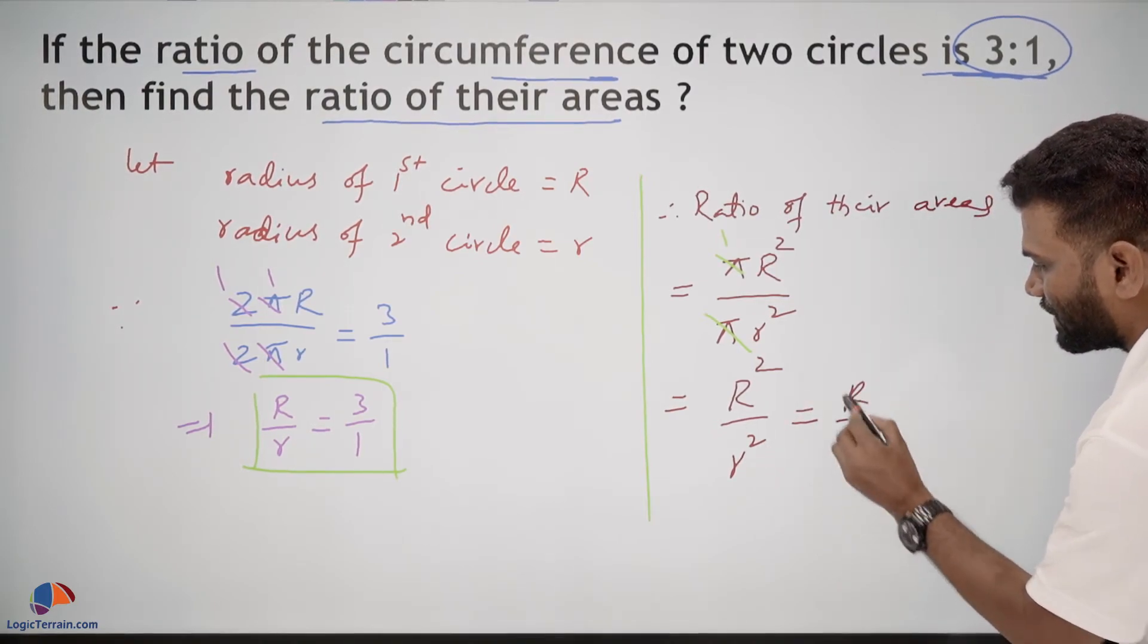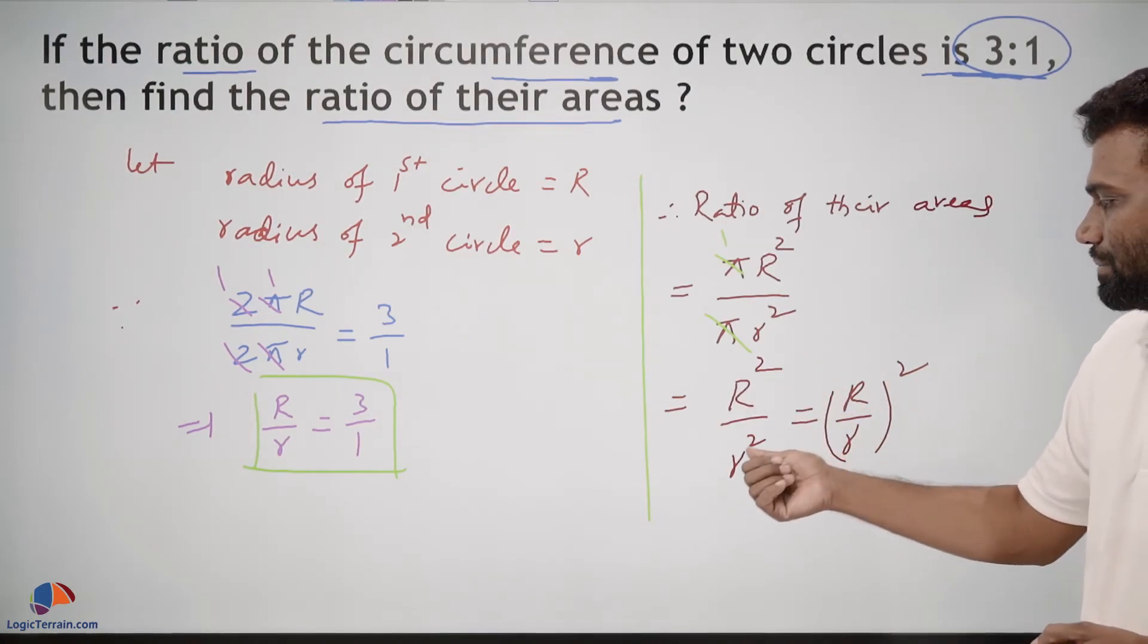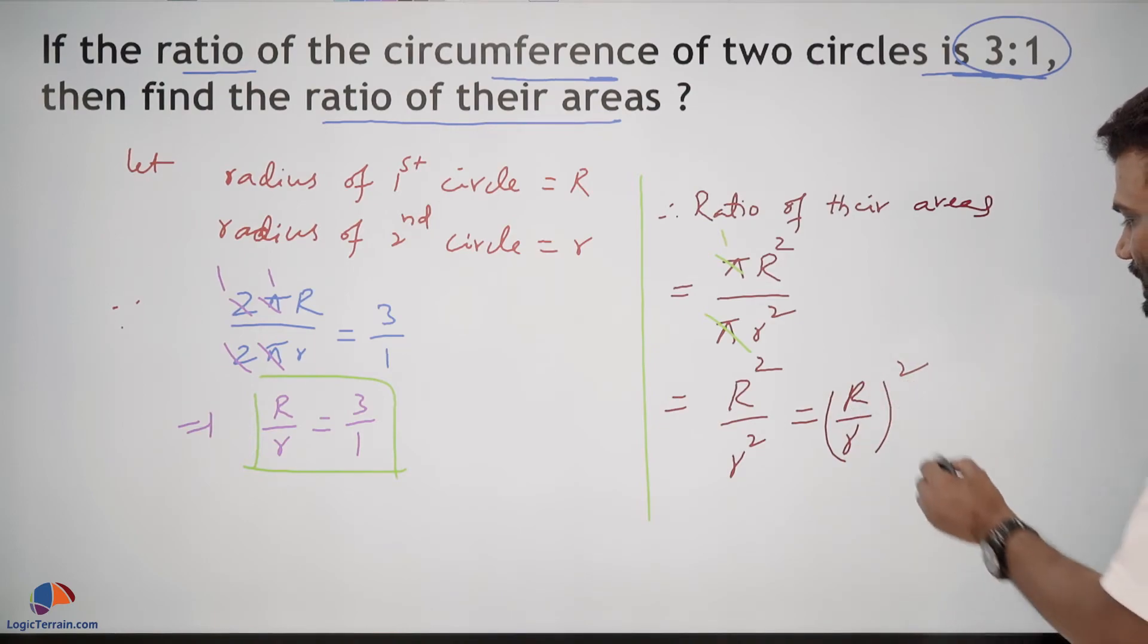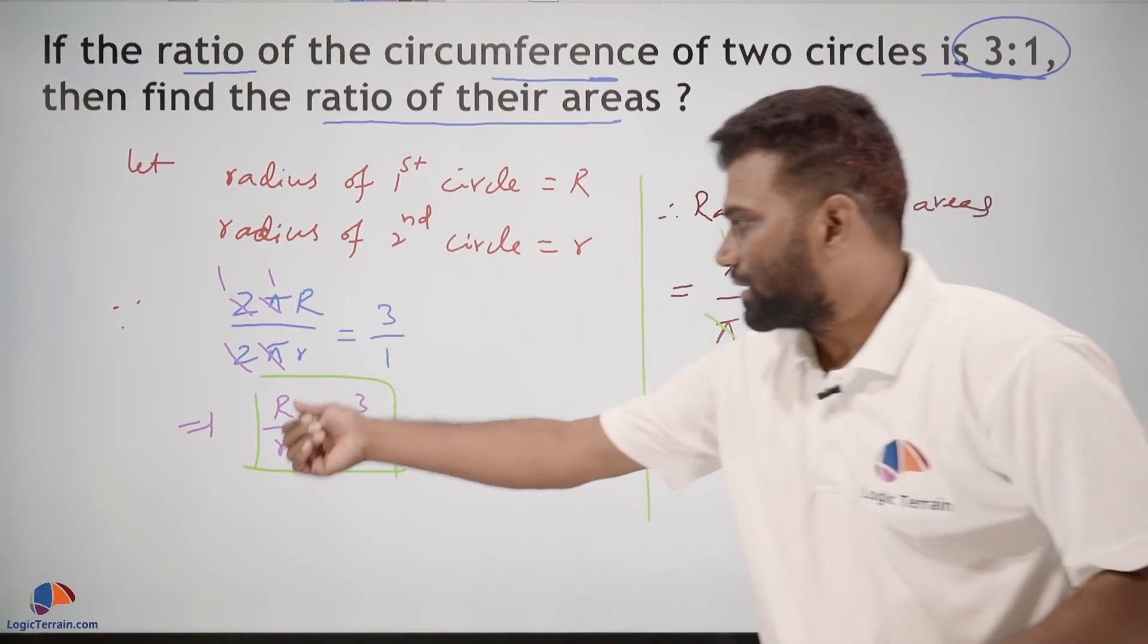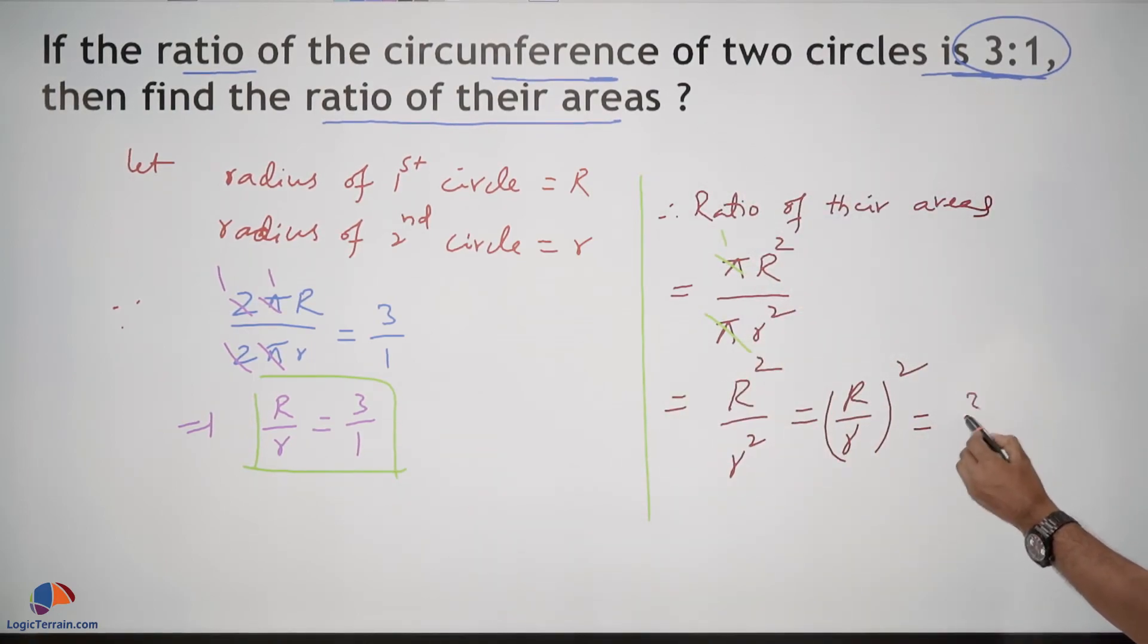This can be rewritten as R upon r whole squared, because a power m upon b power m equals a/b whole power m. We have R upon r is 3 upon 1, which equals 3 upon 1 whole squared.